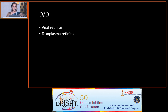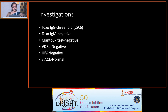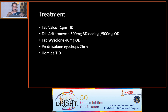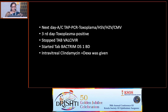Investigations showed Toxo IgG with a 3-fold rise in titer; IgM was negative; Mantoux was negative; VDRL and HIV were negative. We started treatment with Tab Valacyclovir 1g TID along with azithromycin, prednisolone, and topical medications. The next day, we took her for an AC tap and the sample was sent for PCR for toxo and viral genomes. The result came positive on the third day for Toxoplasma and negative for virals. We stopped Valacyclovir and started Tab Bactrim DS 1 BD along with oral prednisolone, and gave an injection of intravitreal clindamycin and dexamethasone.